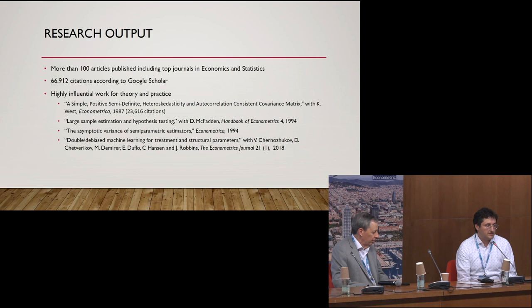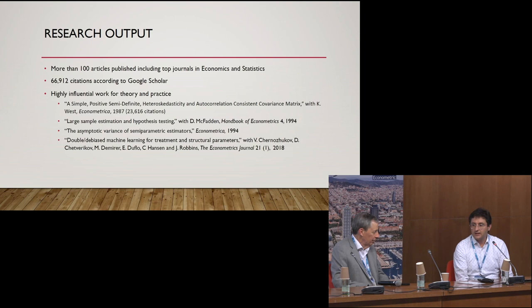He has done research in many different areas, including inference in linear regression models, asymptotic theories, semi-parametric, non-parametric, panel data, sample selection, GMM, many and weak instruments, non-parametric simultaneous equation models, and more structural econometric models. More recently, he has been working on using machine learning tools in econometrics, particularly for causal inference. He has published more than 100 articles and has almost 67,000 citations.